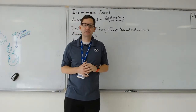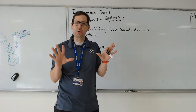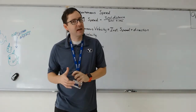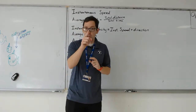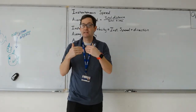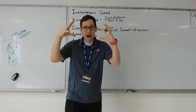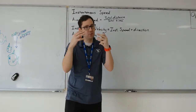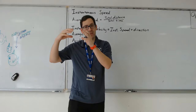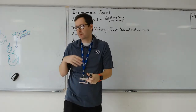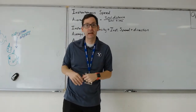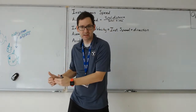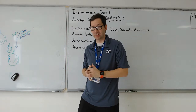A student in my class said, well, some cars have a compass on the dashboard that shows direction. Absolutely — but that's not part of the speedometer. You can combine the information from your speedometer, which gives you the magnitude, with the direction from your GPS or compass, and use that to determine your instantaneous velocity from those two pieces of information.